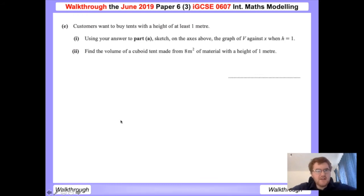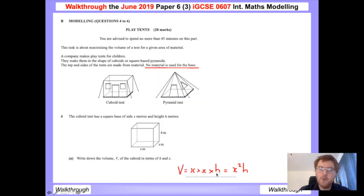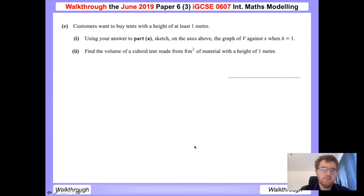On to part E. So customers want to buy tents with a height of at least one meter. Using your answer to part A, sketch on the axes above the graph of v against x when h equals 1. We often have to work backwards through the problem. To remind you from part A, our formula was v equals x squared h. Now we're told h is equal to 1, so our volume is going to be equal to just x squared.